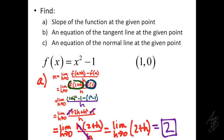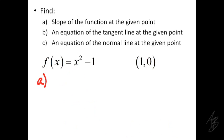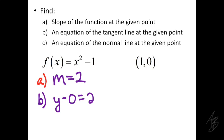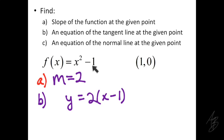In part a we got a slope of the tangent line of 2. In part b, we find the equation of the tangent line at that point. We plug the point (1, 0) and the slope 2 into the point-slope formula: y minus 0 equals 2 times (x minus 1). We don't need to do any simplification, but we'll remove the minus 0, giving us y equals 2 times the quantity x minus 1. This is the equation of the tangent line to this function at this point.